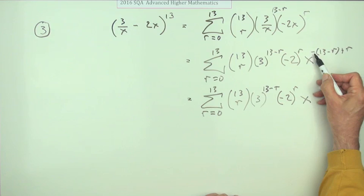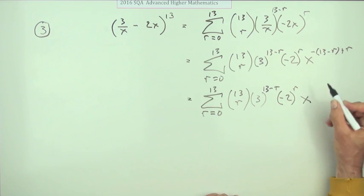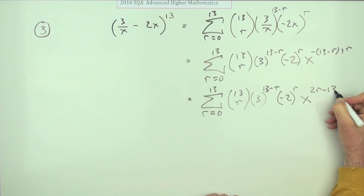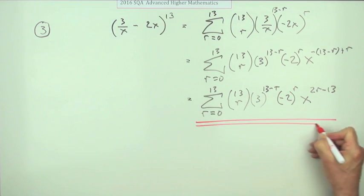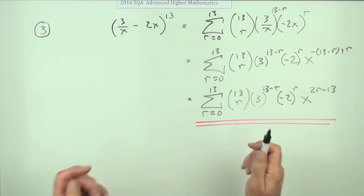But this needs simplifying. So that means you've got a negative 13, but that's a plus r plus r, so it's 2r minus 13. So there's my expansion. Now just use it.